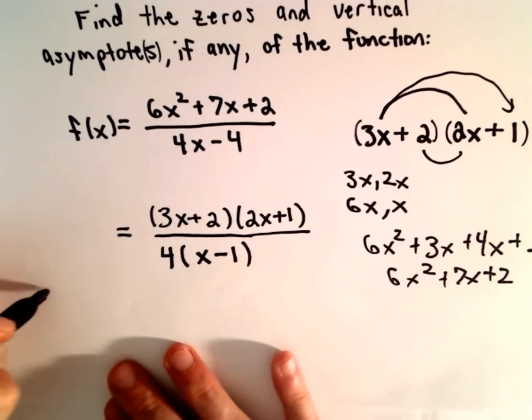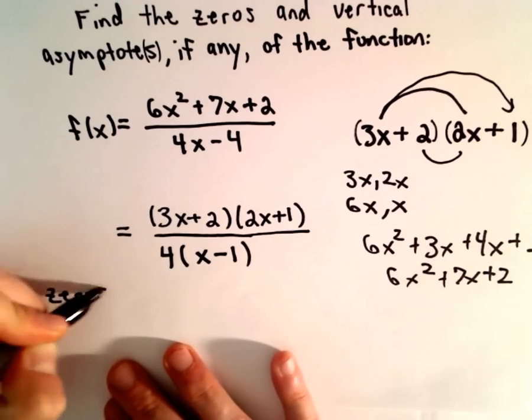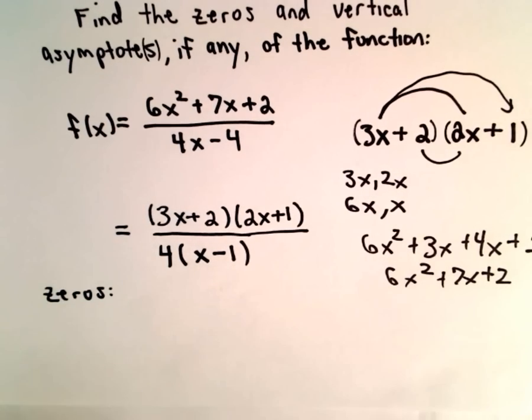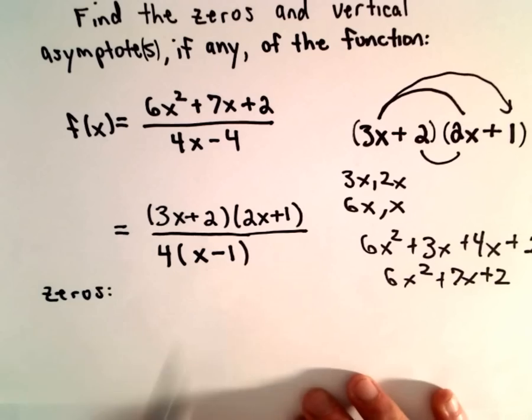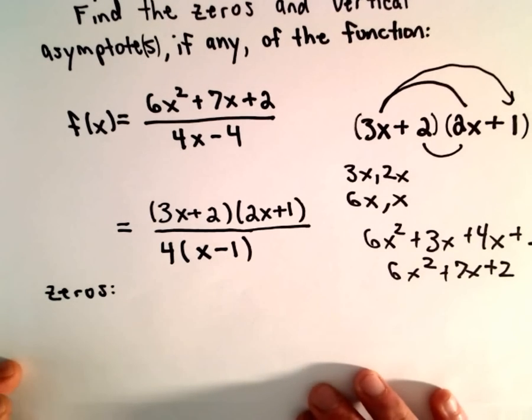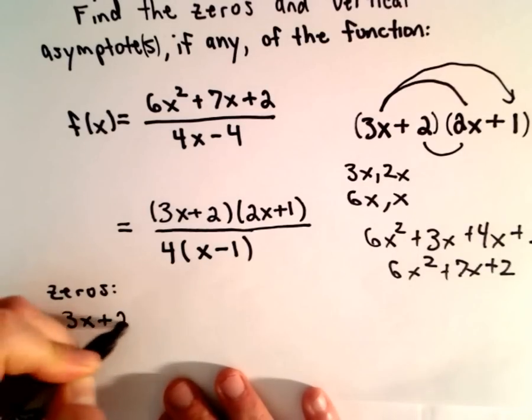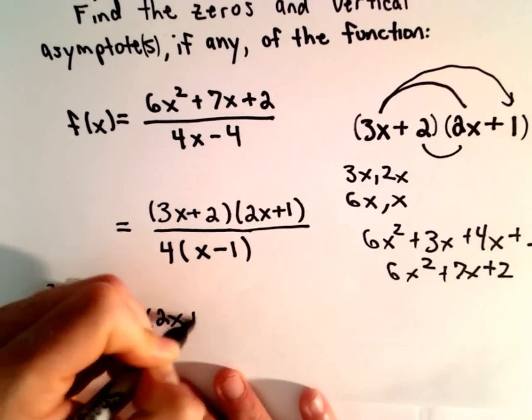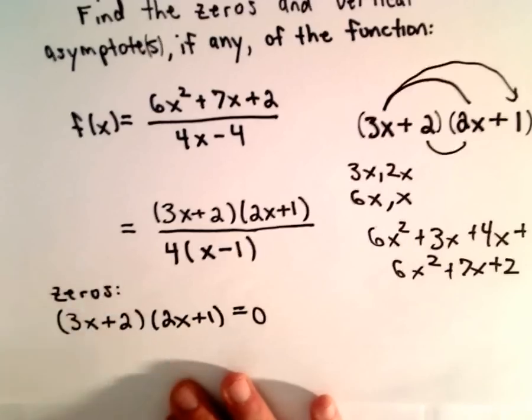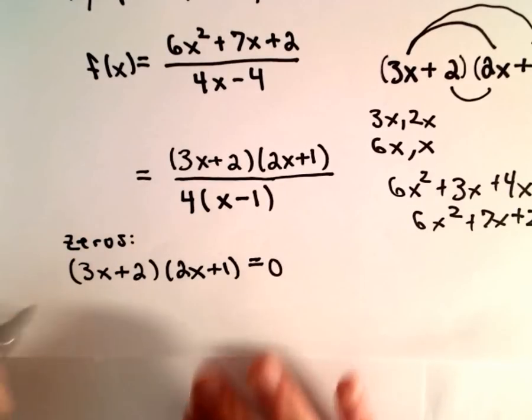Okay, so to find the zeros, first notice that there's no common factors. There's no factor in the numerator that's also in the denominator. So in this case, to find the zeros, I'm going to take the numerator, set it equal to zero, and then set each factor equal to zero and solve.